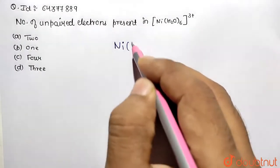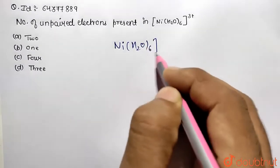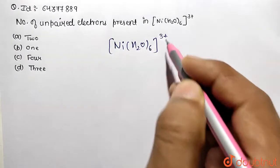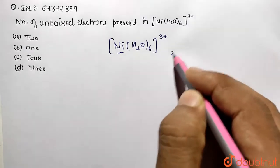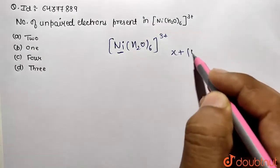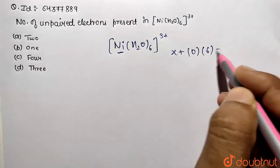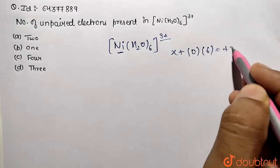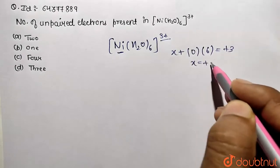So first of all what we need to do, we need to calculate the oxidation state of this given complex entity. For that I assume initial oxidation state of nickel is X. This aqueous neutral ligand so 0 multiplied by 6 and overall charge given as positive 3. So the value comes out to be only plus 3.